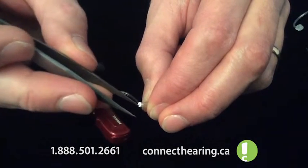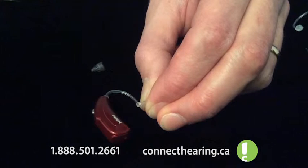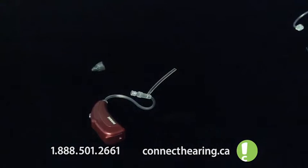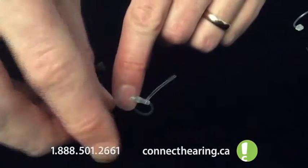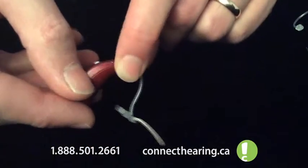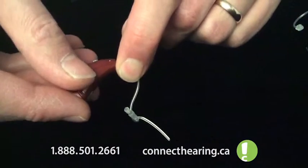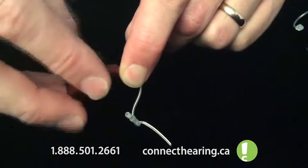Sometimes the tips can be in there a little bit harder than others, so I've got my tweezers here. And this is something that may happen to you at home. Now while I've got it out, before I put the wax guard back in, I'm going to unthread the tubing from the hearing aid by screwing it counterclockwise.